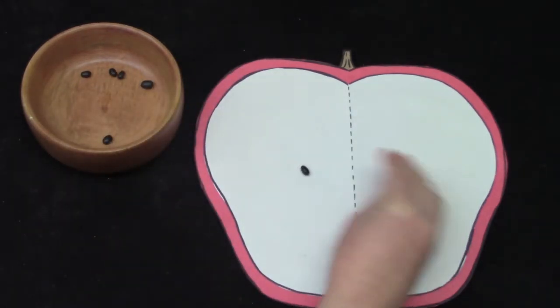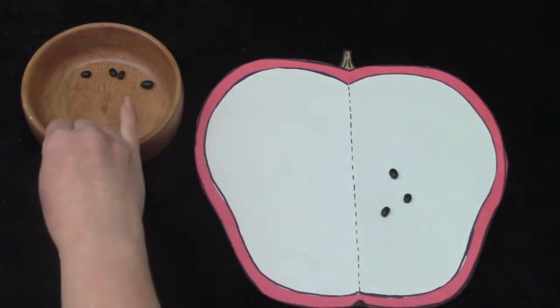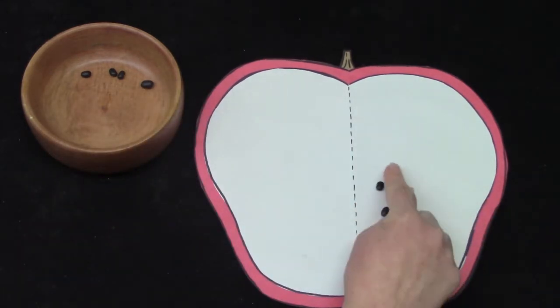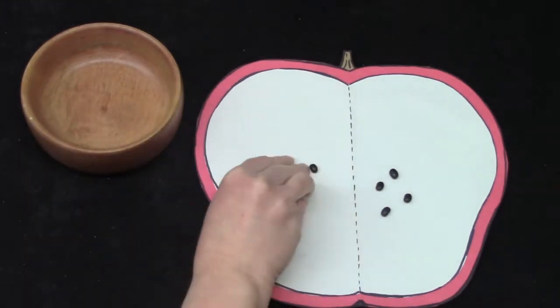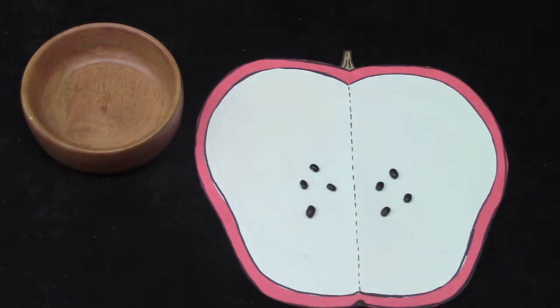I am going to put some seeds on this side of the apple. I have one, two, three, four seeds, and I'm going to put some seeds on the other side as well. How many are on this side? That's right, there are four.